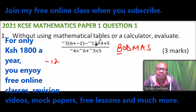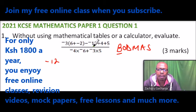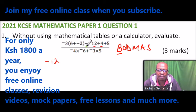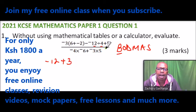After that, we deal with the division. We divide minus 12 by 4, which gives minus 3. Then we have another minus, so that becomes plus 3, and then we have plus 5.